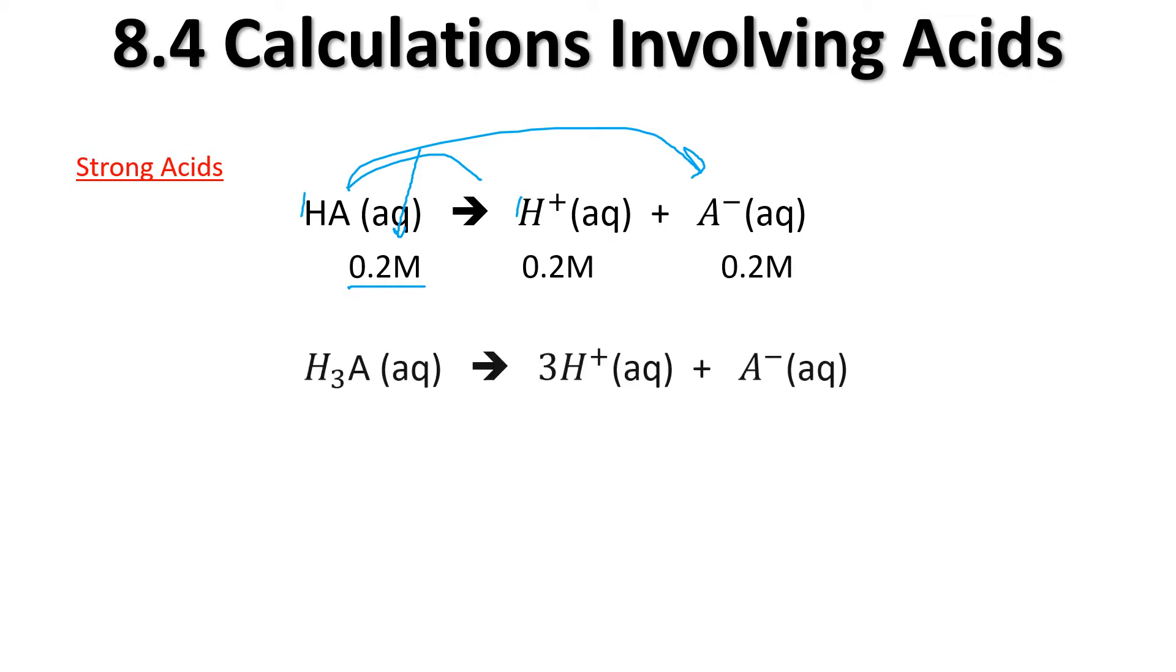Now that can change though. Let's look at another strong acid. We know it's a strong acid because of the straight arrow here. And now we've got a 3, which means we're putting a 3 in front. So we have a 1 to 3 ratio. If we start with a 0.2 molar concentration, our acidic concentration is actually 0.6. The final one is 0.2 because we have a one-to-one ratio of those.